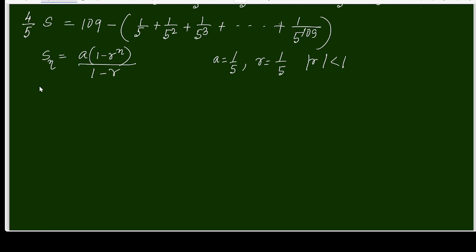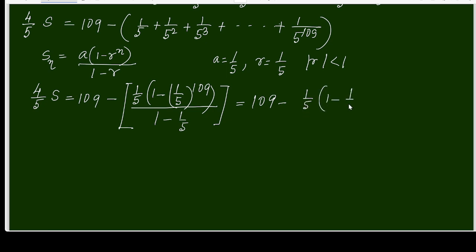So it will be 4 by 5 times S equals 109 minus (1 by 5 times 1 minus 1 by 5 power 109 over 1 minus 1 by 5). This is the same as 109 minus (1 by 5 times 1 minus 1 by 5 power 109 over 4 by 5).